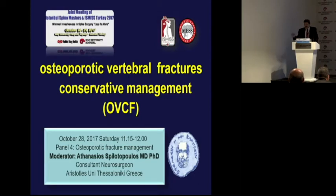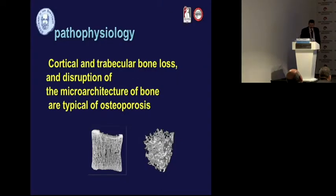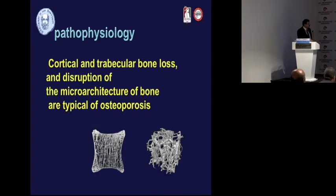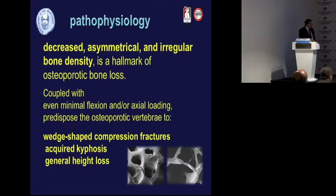There is no option but to look for a real conservative treatment. What we see is cortical and trabecular bone loss in this osteoporotic situation. We are getting more and more familiar with T-scores: it is normal at minus 1 and severe osteoporotic when it is minus 2.5.